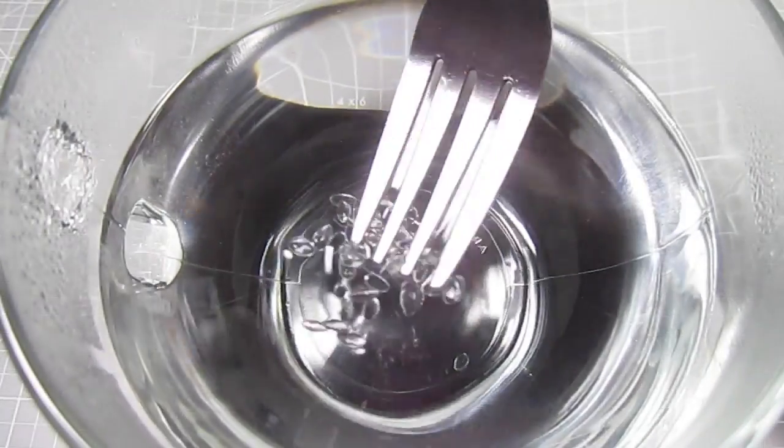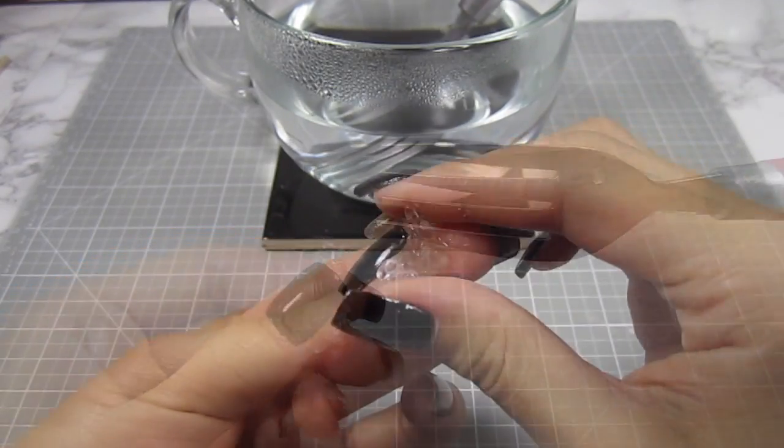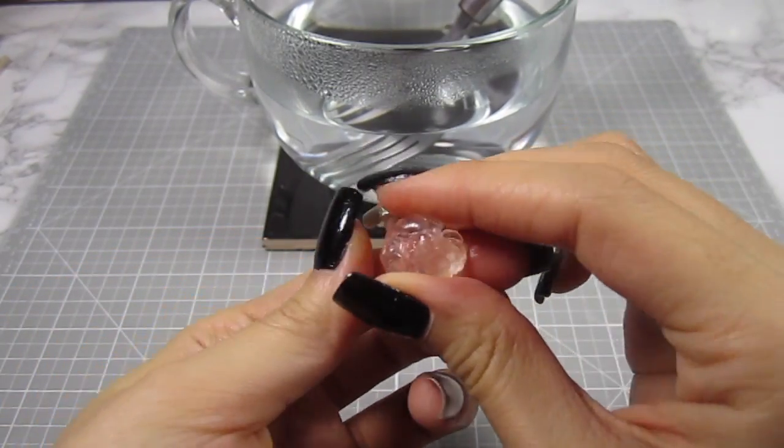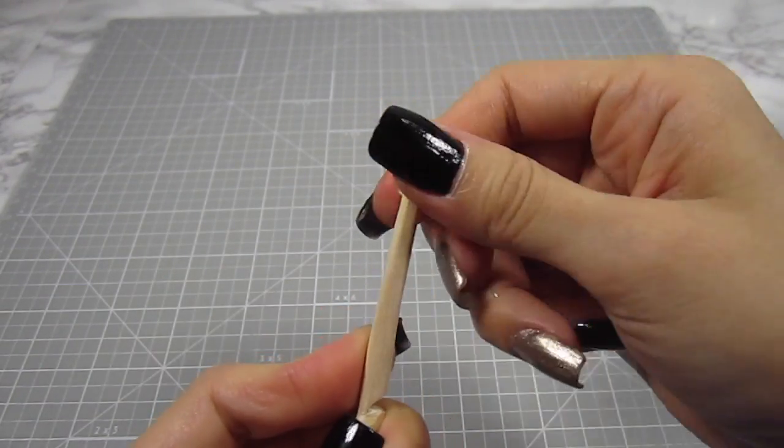After about a minute or two, I pull them out with a fork. Let it cool for a second so you don't burn yourself and begin to mush it together. Wrap the plastic around the top of the handle. Try to work quickly because this stuff hardens as it cools.